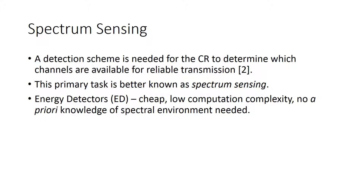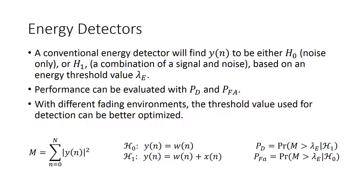These devices are considerably cheap and low in complexity and resource usage. No previous knowledge of the received signal or of the surrounding spectra is needed. A conventional energy detector performs summing, squaring, and absolute value operations to assess the received signal y(n)'s energy. Based on the energy value, it can indicate one of two hypotheses: H0, which indicates the energy consists of noise only or no signal is present, or H1, indicating that a signal is present with noise also present within the channel transmission. The hypothesis decision is based on an energy threshold value.